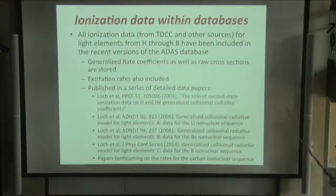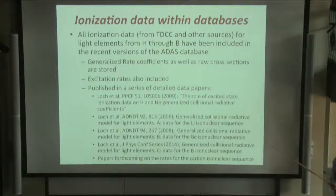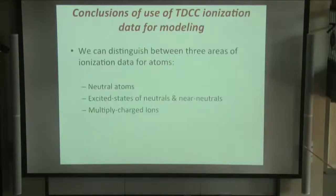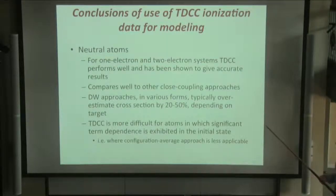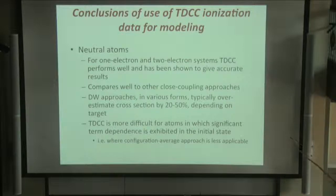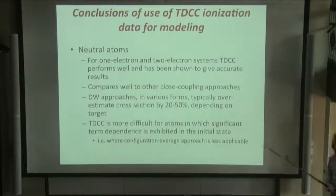All these data have been archived in the ADAS database and are also available through the IAEA website. A series of data papers has published generalized collision strengths or rate coefficients for hydrogen all the way up to carbon and nitrogen. In terms of uncertainty, I'd like to draw a distinction between three groups: neutral atoms, excited states, and multiply charged ions. For neutral atoms, the time-dependent method works well for one and two-electron systems; where measurements don't agree, a persuasive argument can often be made that the measurement needs revisiting. Distorted wave approaches tend to overestimate by 20–50% depending on the target and configuration.